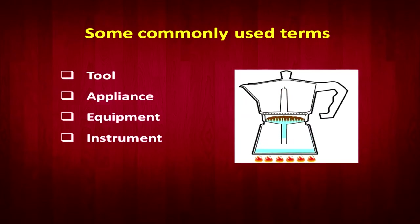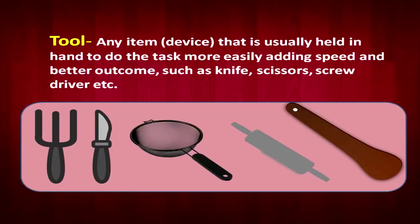Let us define what a tool is. Thank you Dr. Agarwal for introducing me so well. I am here to tell you about how you can use household equipment. We will start with the various nomenclature — tools, equipment, instruments, and appliances — and simplify them. A tool is any item or device that is usually held in hand to do a task.